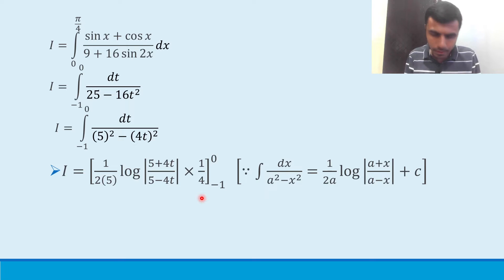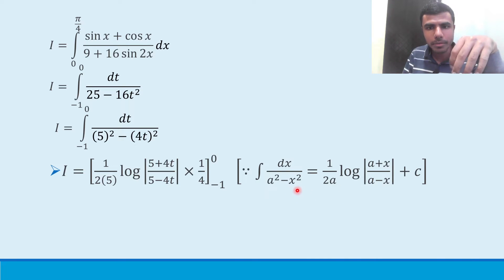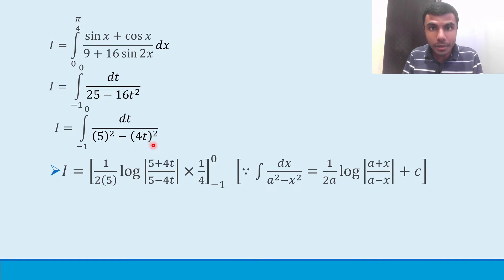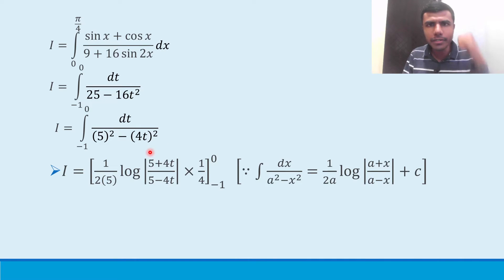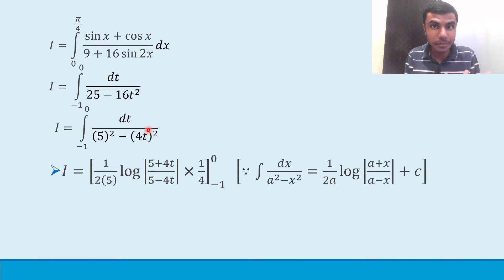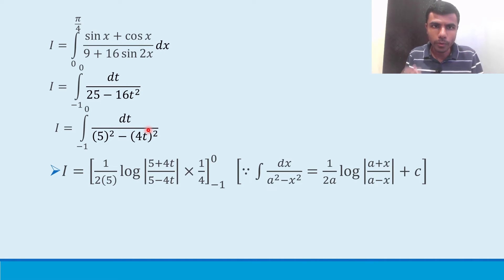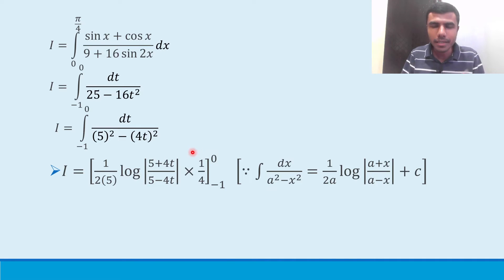So the full expression is (1/4) · (1/10) · log|(5 + 4t)/(5 - 4t)|, which gives 1/40 · log|(5 + 4t)/(5 - 4t)|, evaluated from t = -1 to t = 0. I hope my explanation was clear. If you still have any doubts, please come in the comments box and I will try my best to help you out.